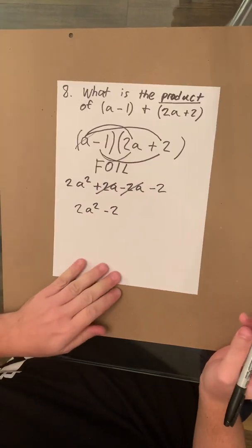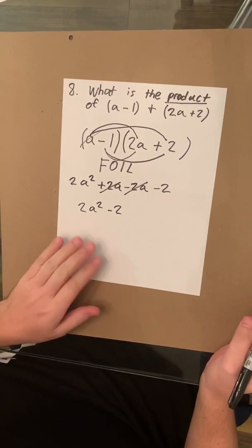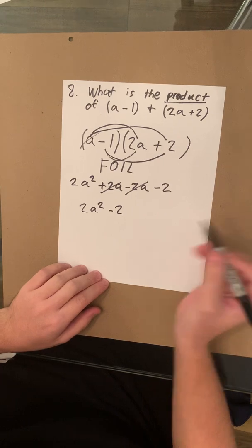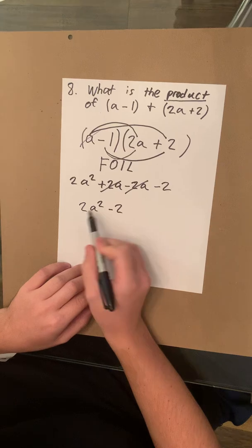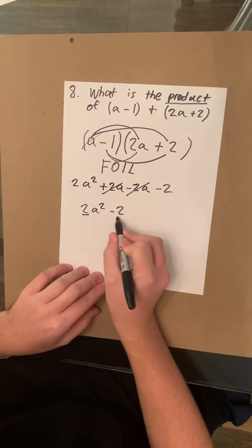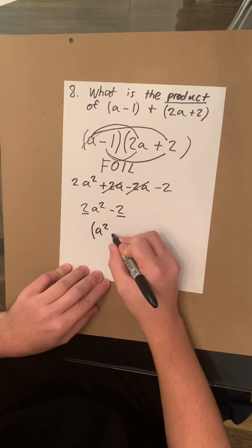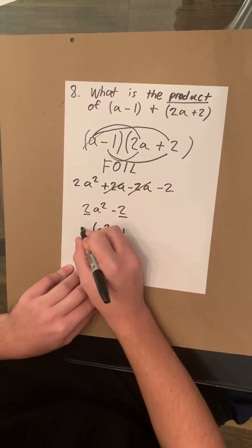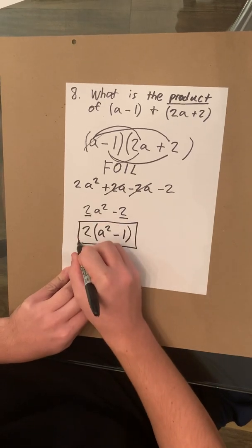But remember how I mentioned earlier, in math, you always simplify. You want to make the number as small as possible. If you factor this, you'll notice that 2a squared and 2 have a number in common. That would be 2. So you can factor it by pulling 2 out of the equation. And that is your answer.